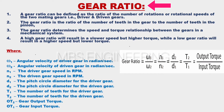We will discuss what is the gear ratio and its formula. A gear ratio can be defined as the ratio of the number of rotations or rotational speeds of the two mating gears — the driver and driven gears.